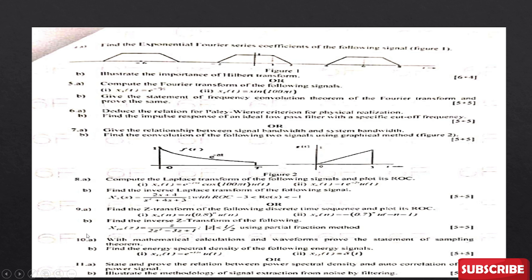If you know the process of obtaining a Z-transform using various methods, you can easily answer for 10 marks, and if you know Laplace transform, another 10 marks are definite. From Unit 5: prove the statement of the sampling theorem using mathematical calculations and waveforms, find the energy spectral density of a given energy signal, state and prove the relationship between power spectral density and autocorrelation of a power signal, and illustrate the methodology of signal extraction from noise by filtering.